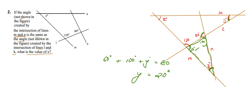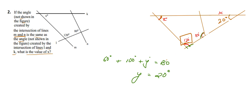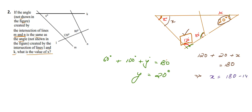Since we are told that the two angles are equal, this angle is also 20 degrees. Now, looking at the triangle formed with X, 120 degrees, and 20 degrees, these three angles sum to 180 degrees: 120 plus 20 plus X equals 180. Therefore X equals 180 minus 140, which gives 40 degrees. So our answer to this question is X equals 40 degrees.